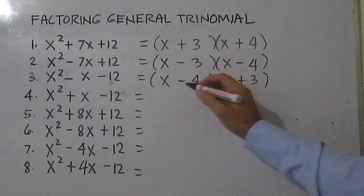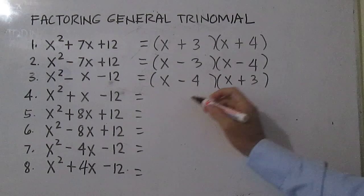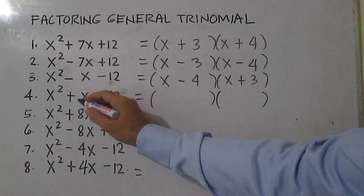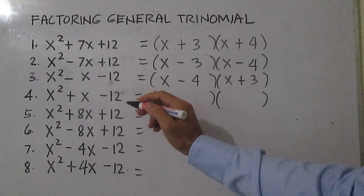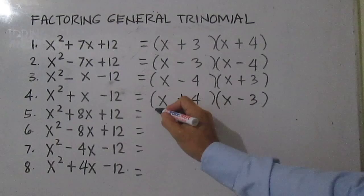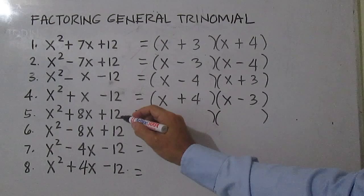Let's check: X times X is X squared, negative 4 times 3 is negative 12, and negative 4X plus 3X is negative 1X. For number 4, the third term is still negative 12 but the middle term coefficient is positive 1. Factoring X squared gives X and X, and this time you have positive 4 and negative 3.